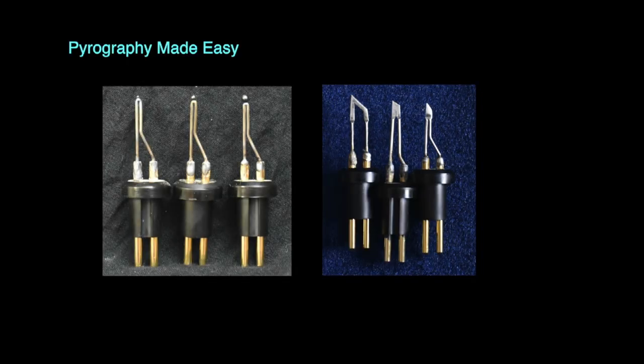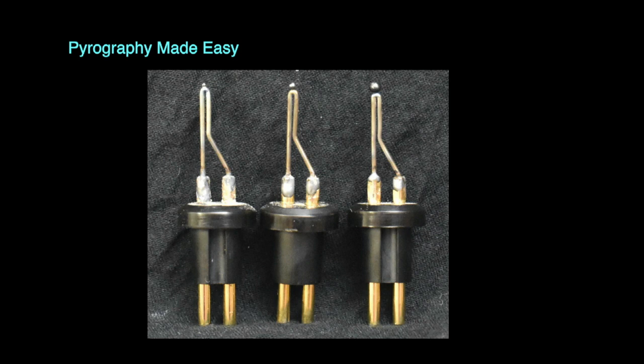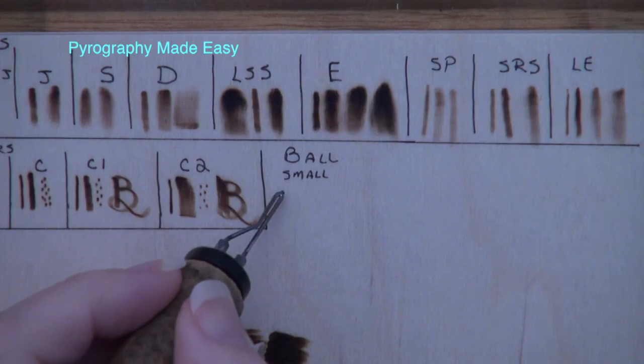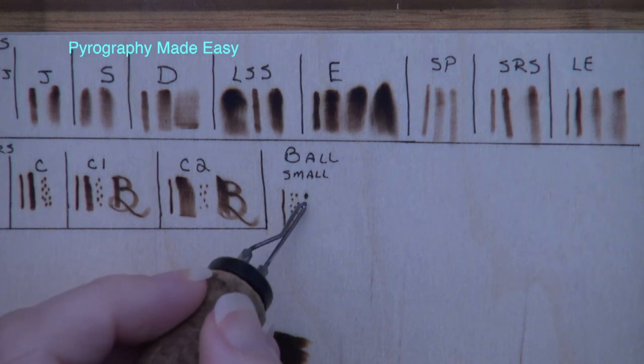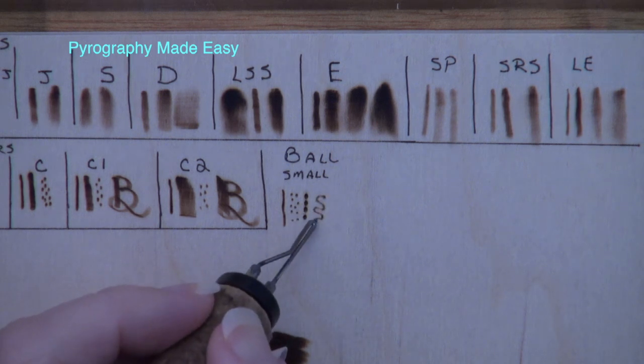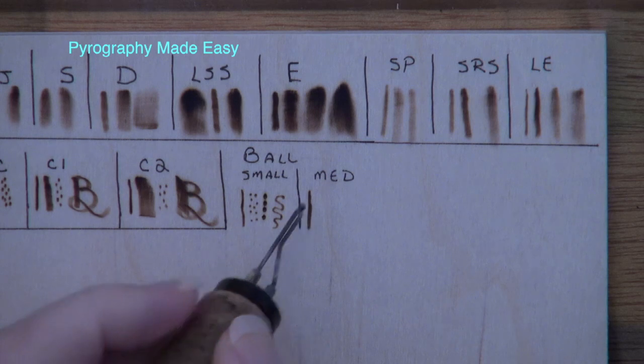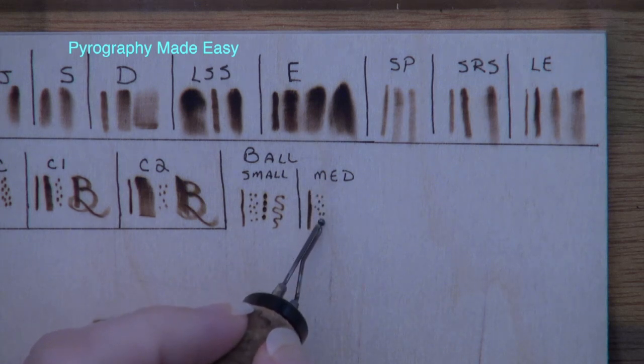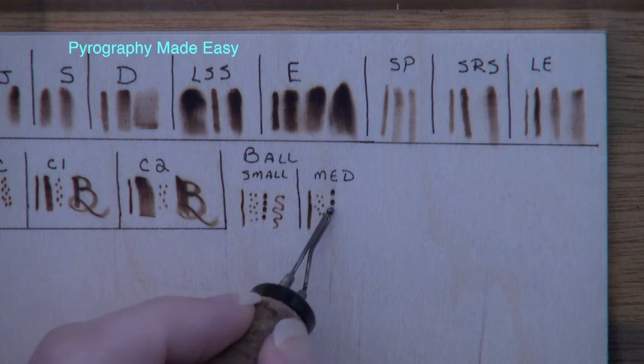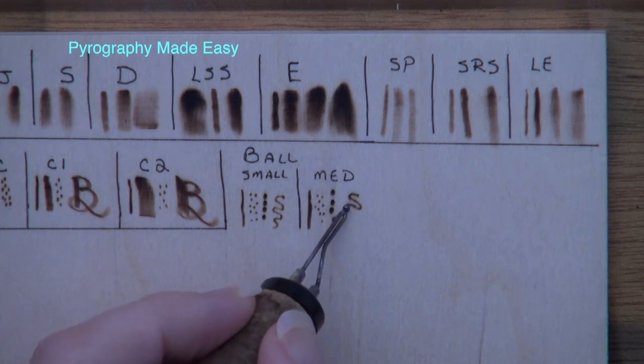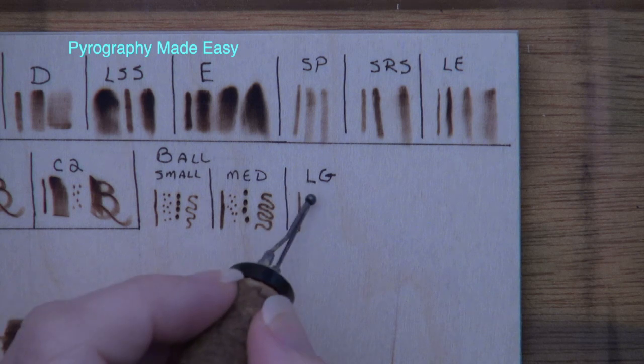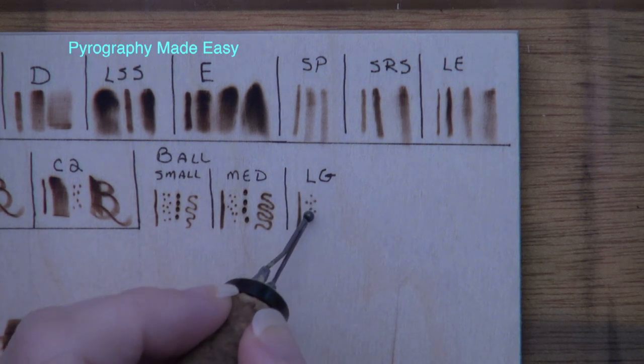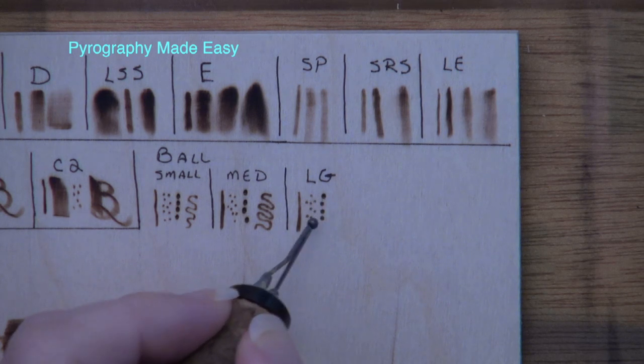Other pen tips. Now let's talk about the other pen tips I use. We will start with the ball pen tips. I bought the set of three ball tips that Colwood has and I have found that I tend to only use the medium and the large one. The small ball tip produces the same size of dots as my micro writer. Now the ball tips are great for producing consistently sized dots. The dots can be made smaller or larger depending on how long you hold the pen tip to the wood. A quick tap produces a much smaller dot versus holding the pen tip in place for a fraction of a second.